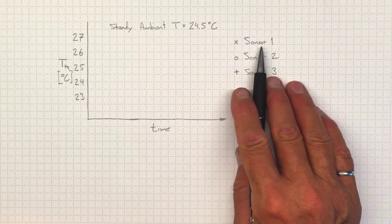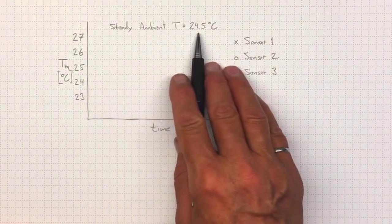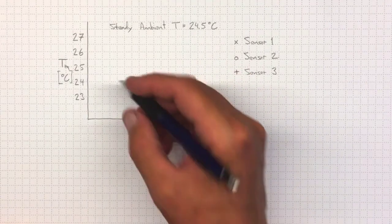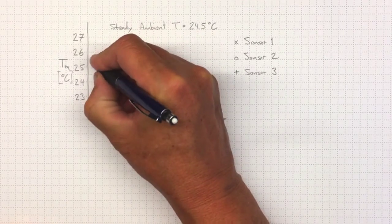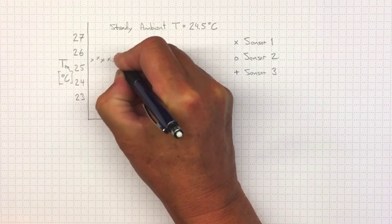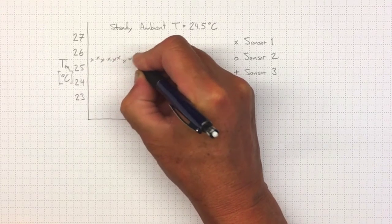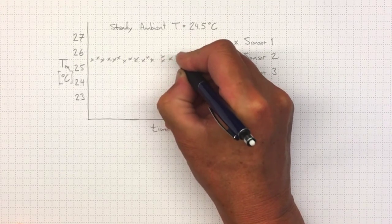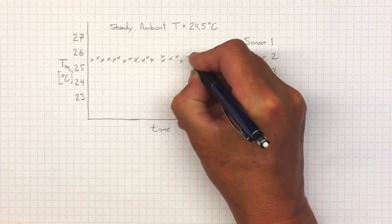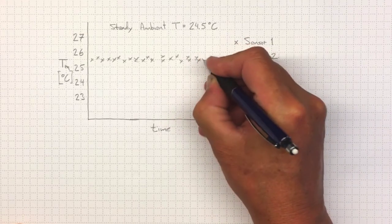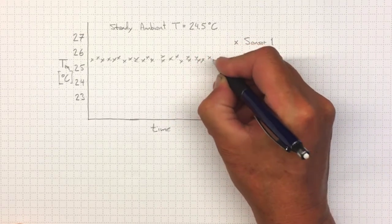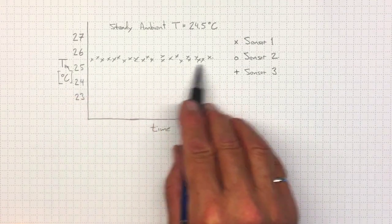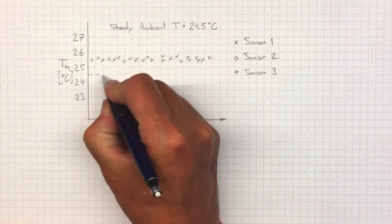So if I took my first sensor and put it into an environment which had a known temperature of 24.5 degrees, I might, over time, see a bunch of measurements that looked something like this. So this is telling me that my individual sensor doesn't have a lot of variability in the measurements that it returns. It's giving me a pretty stable temperature reading, but that stable temperature reading is wrong by about one degree positive.